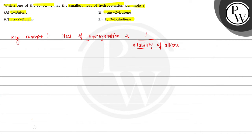So we can write here: more is the stability of the alkene, smallest is the heat of hydrogenation.